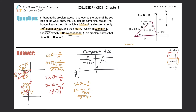Now I plug negative 4.1 into the component table. For the y value, I know the hypotenuse, I know the angle, and I'm looking for the side adjacent to that angle, so I use cosine. Cosine of theta equals adjacent over hypotenuse. Cosine of 20 equals positive y over 12. Cross-multiplying gives cosine of 20 times 12, which comes out to about 11 meters. Now I plug that y value into the component table.